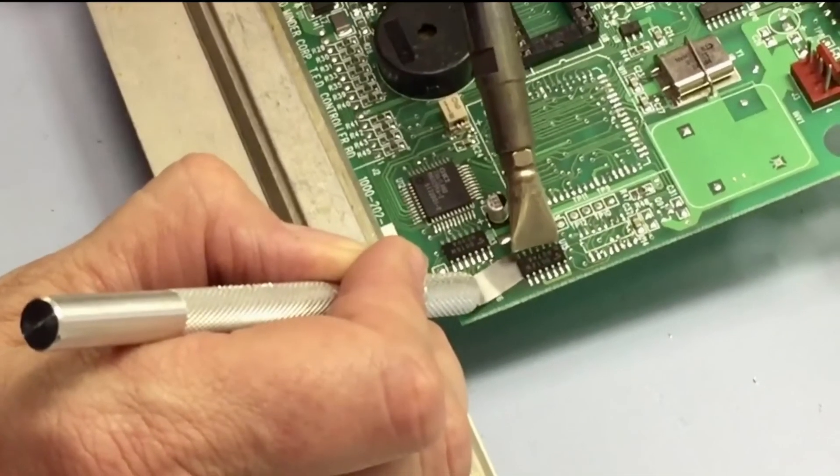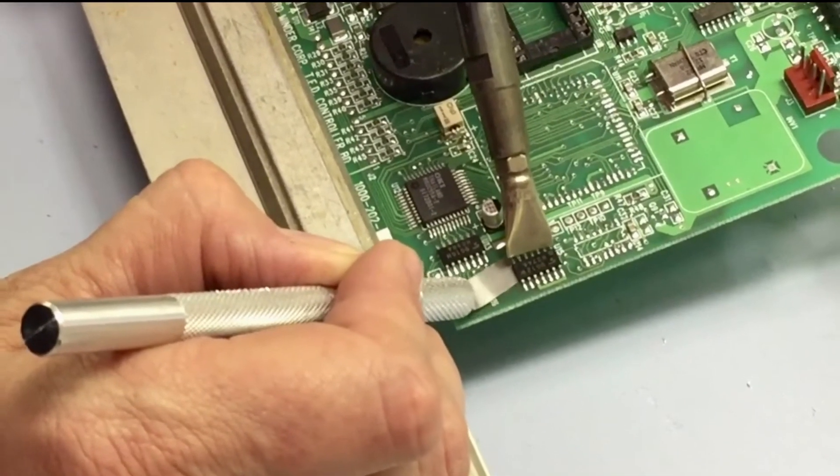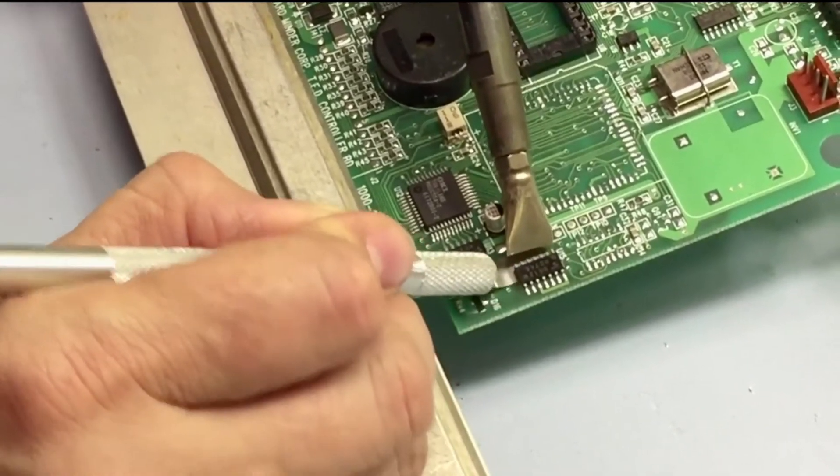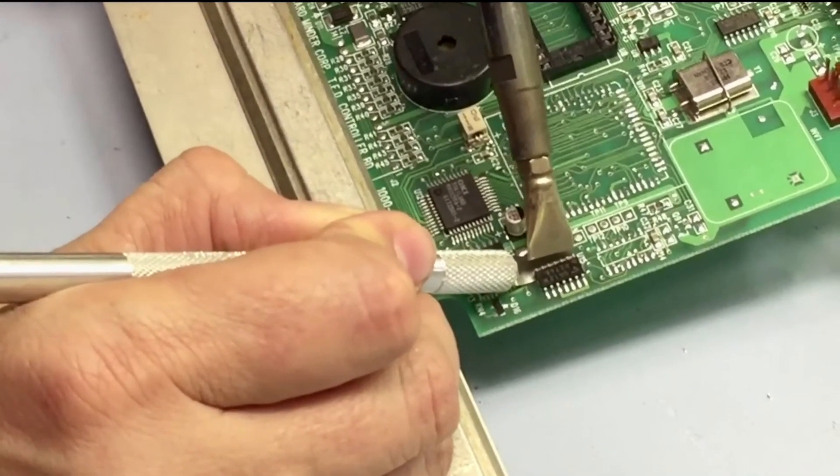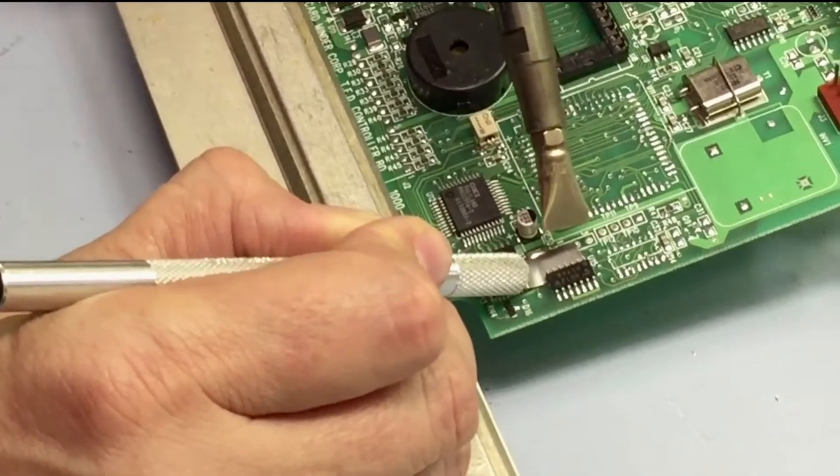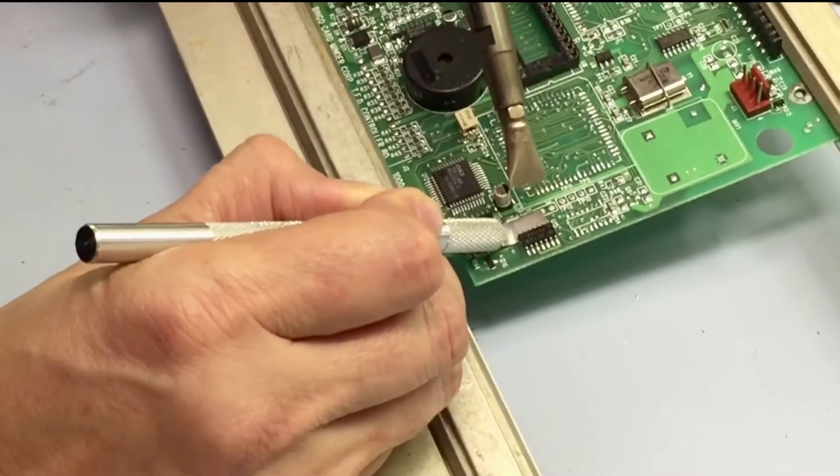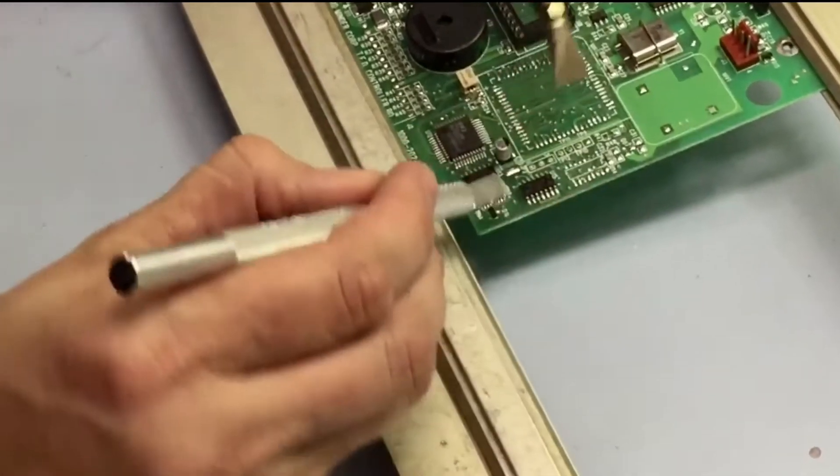The nice thing with this is that you're heating this whole area, so this whole side is going to come up pretty quick as you can see. Once it starts reflowing, you can put your shim tool right under there. Now we'll work on the other side.